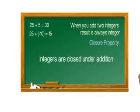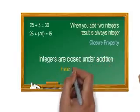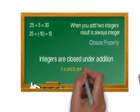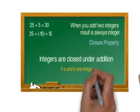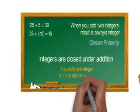We can say integers are closed under addition. If a and b are two integers, the result a plus b is also an integer.